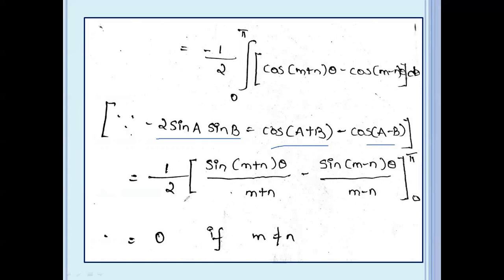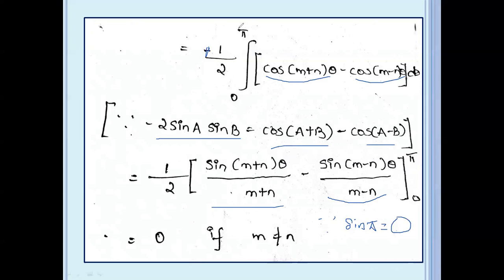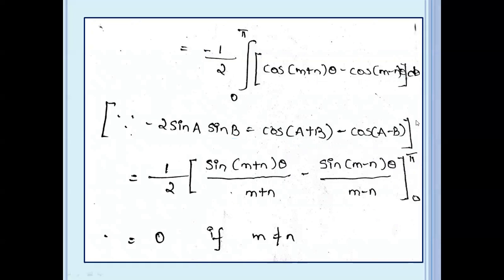Equal to 1 by 2 times: sin(m+n)θ by (m+n) minus sin(m minus n)θ by (m minus n), evaluated from 0 to π. Applying limits: sin π value is 0 and sin 0 value is 0. So the answer is 0 if m not equal to n.